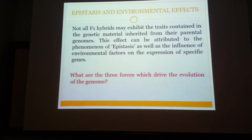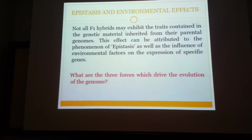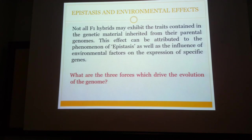Three forces drive the evolution of the genome: mutation, migration, and genetic drift. Mutation can occur in situ as a result of environmental factors. Migration occurs when you breed two varieties. Drift is the third force. When breeding in a controlled environment, we have control over these factors. For instance, we can control mutation by increasing the level of mutagens — chemicals such as colchicine or ethyl methanesulfonate are used to develop variants of the plant. Many crop varieties in today's commercial environment are developed using such mutation-inducing chemicals.